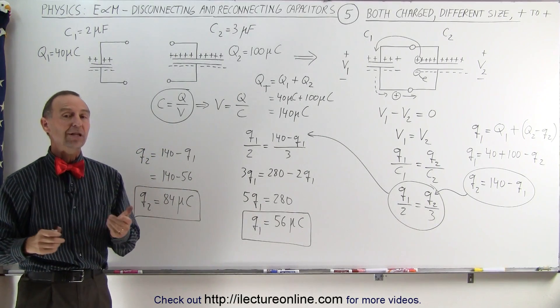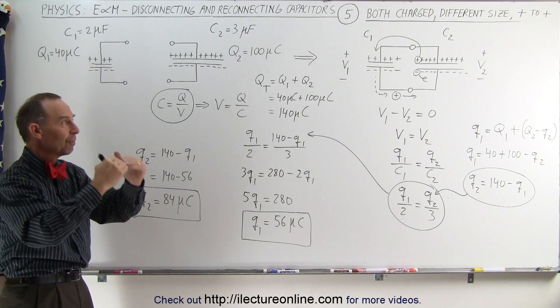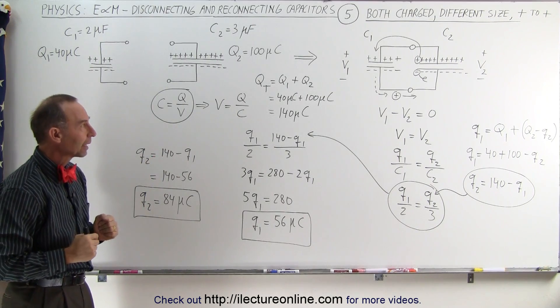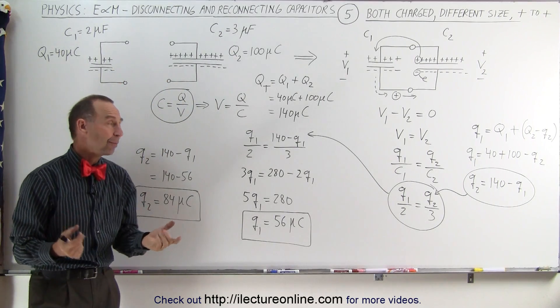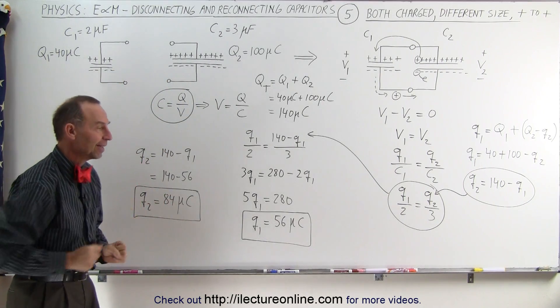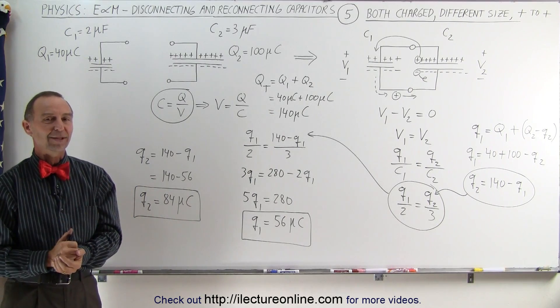The final charge on each of the two capacitors, after we connect them, positive to positive, negative to negative, and starting with the initial charge of 40 and 100 microcoulombs. And that's what happens when the capacitors are not the same size, they end up with a different amount of charge, and that's how it's done.